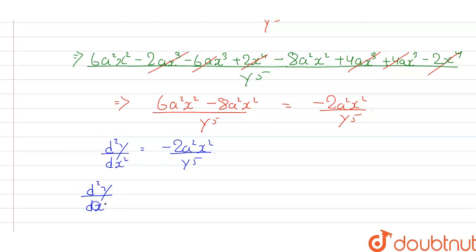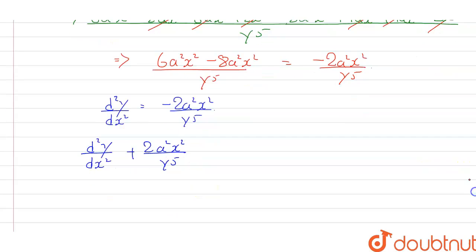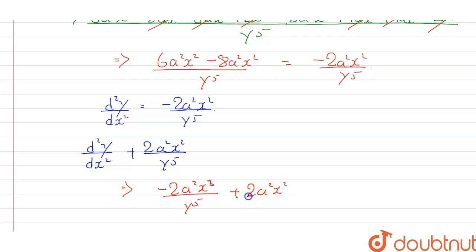In the question we have to prove that d²y/dx² plus 2a²x²/y⁵ is equal to 0. Substituting: minus 2a²x²/y⁵ plus 2a²x²/y⁵ — these terms cancel each other, which is equal to 0. Hence proved.